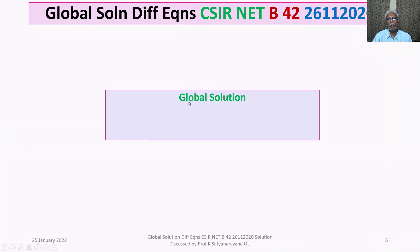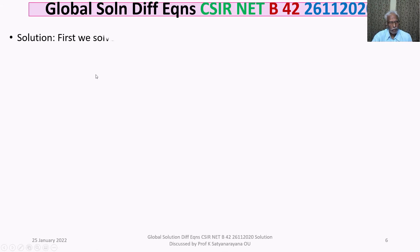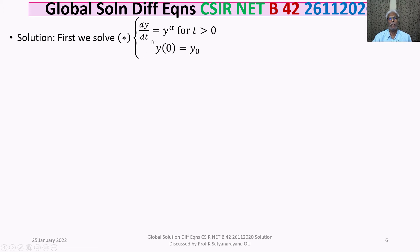We recall the definition given in this question: a solution of a differential equation is said to be a global solution if it exists for all t > 0. With this definition, let us get into the solution. First, we take the equation given by (*), that is dy/dt = y^α for t > 0, with y(0) = y₀.